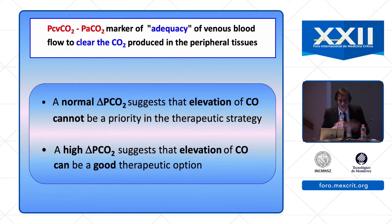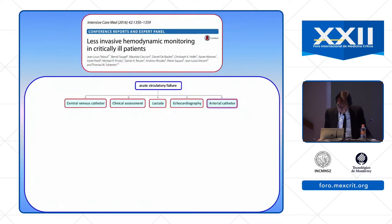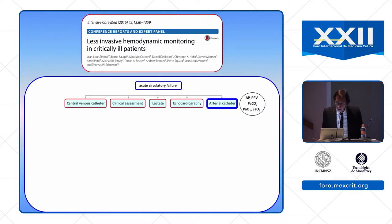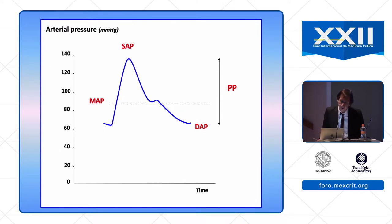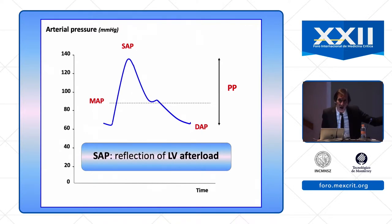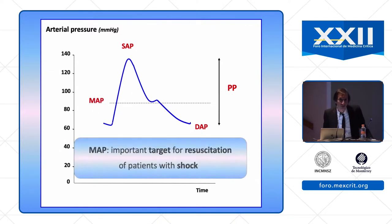This is very simple to do for every patient with shock and does not require any sophisticated device. We also recommend inserting an arterial catheter. It can provide the arterial pressure curve with systolic arterial pressure, which is a good reflection of the arterial pressure — an important target for resuscitation. Don't forget to subtract CVP. The diastolic arterial pressure is a good reflection of vasomotor tone, and a low diastolic pressure is mainly due to depressed arterial tone, making it very easy to detect vasoplegic shock and decide to give a vasopressor.